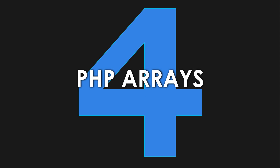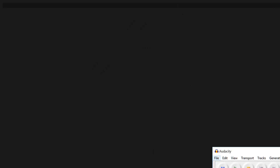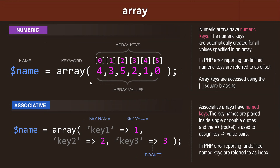Hey guys, what's going on? It's Clever Techie and in this video we're going to cover PHP arrays in more detail. Here's a quick overview of PHP arrays. We define a numeric array using the keyword array and then inside the round brackets we have our values, and the numeric keys are automatically created for us. If we wanted to create an associative array, we use the same keyword array and then inside the round brackets we specify what the key names are in single or double quotes, then use a rocket followed by the value. Let's go ahead and start coding.